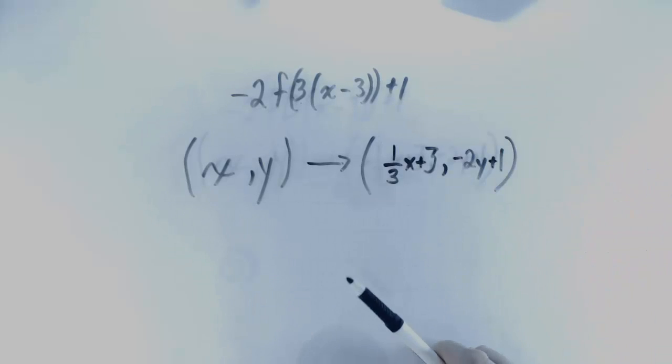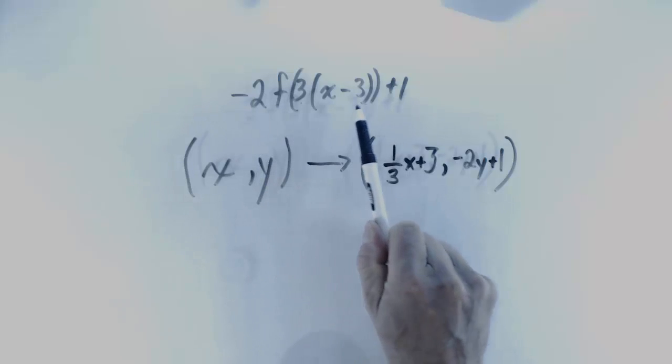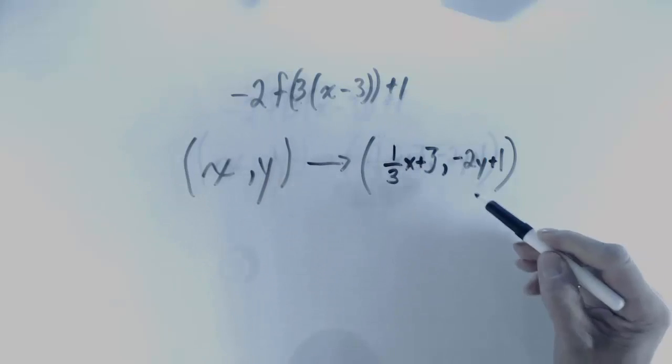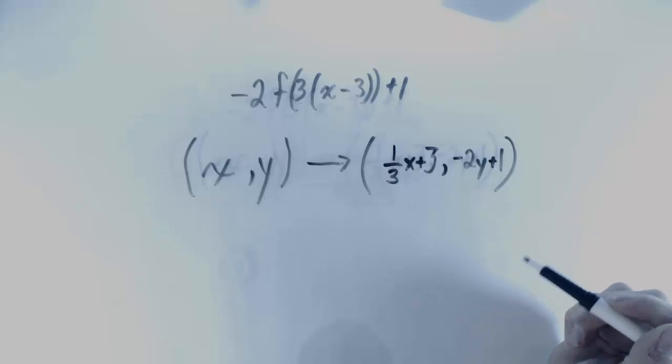So you can actually make a mapping formula just by looking at the transformation of the function. You can use this formula to determine what the new key points are on your function.